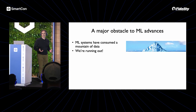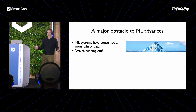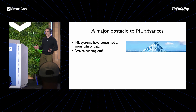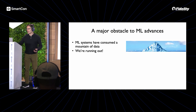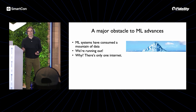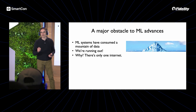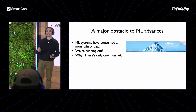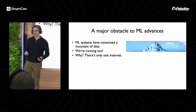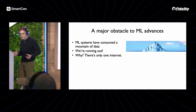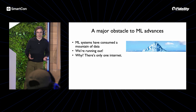Machine learning systems have consumed a vast amount of data, to the point where we are essentially running out — running up against the limits of useful information scrapable from the public internet. The problem fundamentally is we're running out of data because there is only one internet.